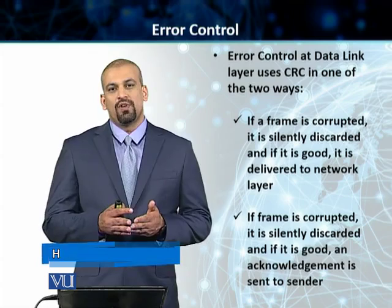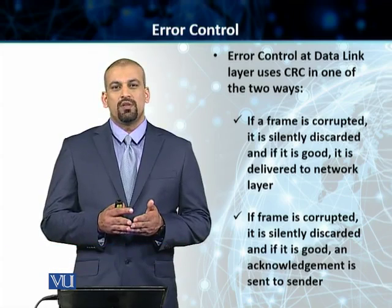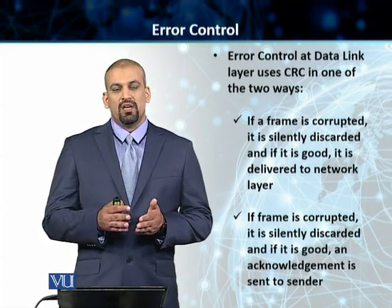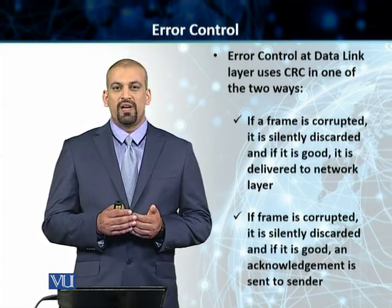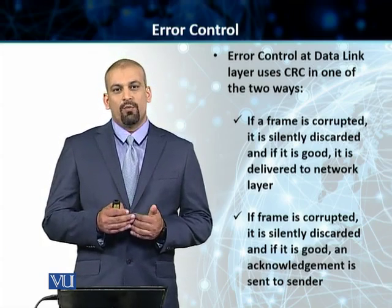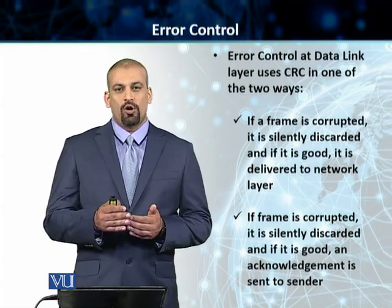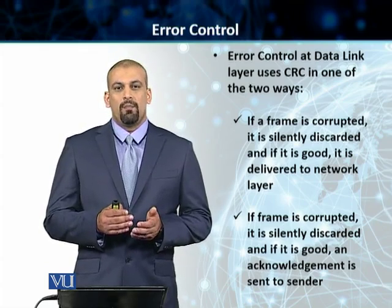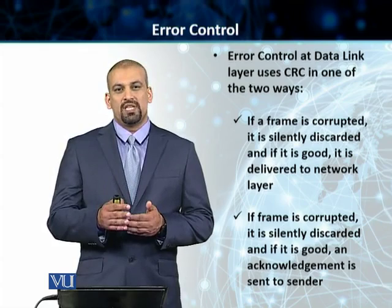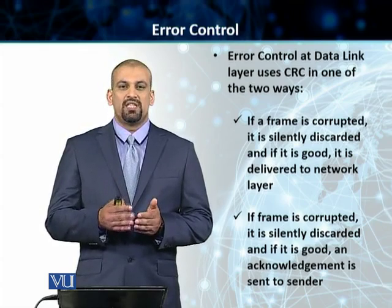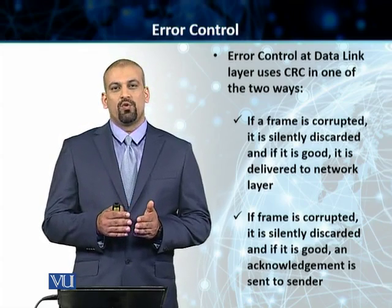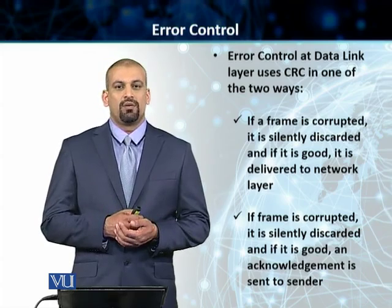In the case of cyclic codes, we add some redundant bits. We calculate those redundant bits at the sending end, append them to our main data word, and then on the receiver end, the receiver uses a checker to verify using those redundant bits whether the data is corrupted or not.